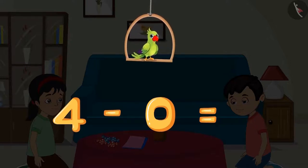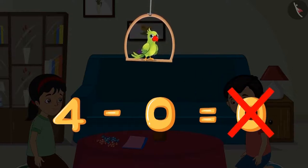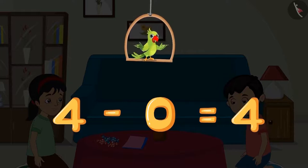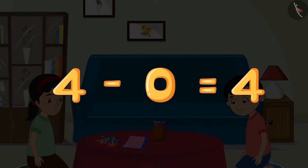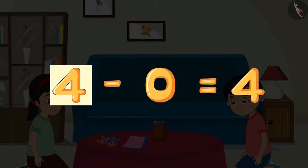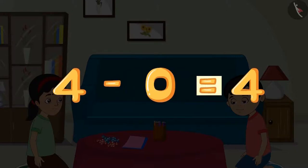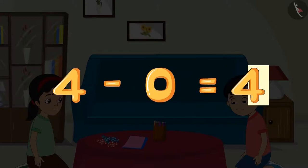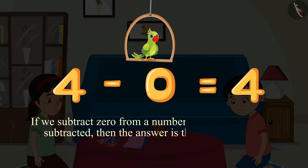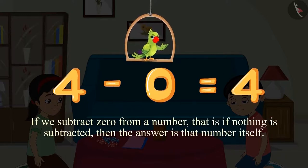Do you think the answer will be zero? No — the answer will be four. This means four minus zero equals four. If we subtract zero from a number — that is, if nothing is subtracted — then the answer is that number itself.